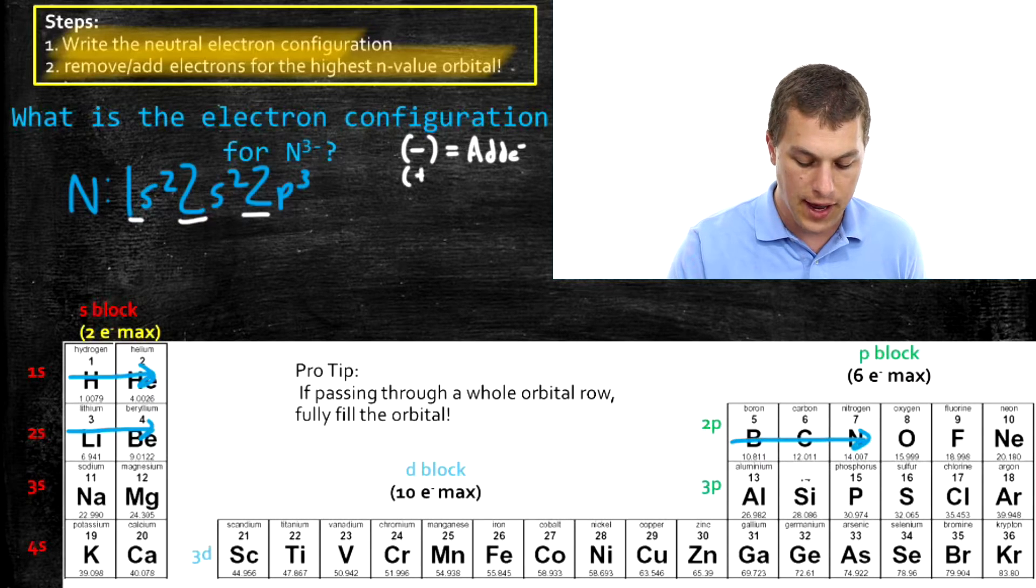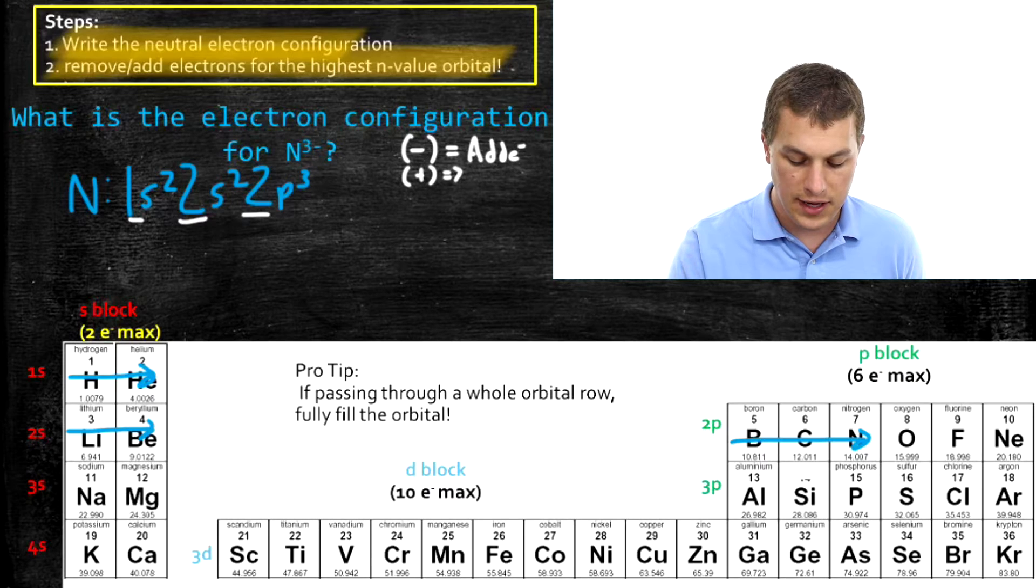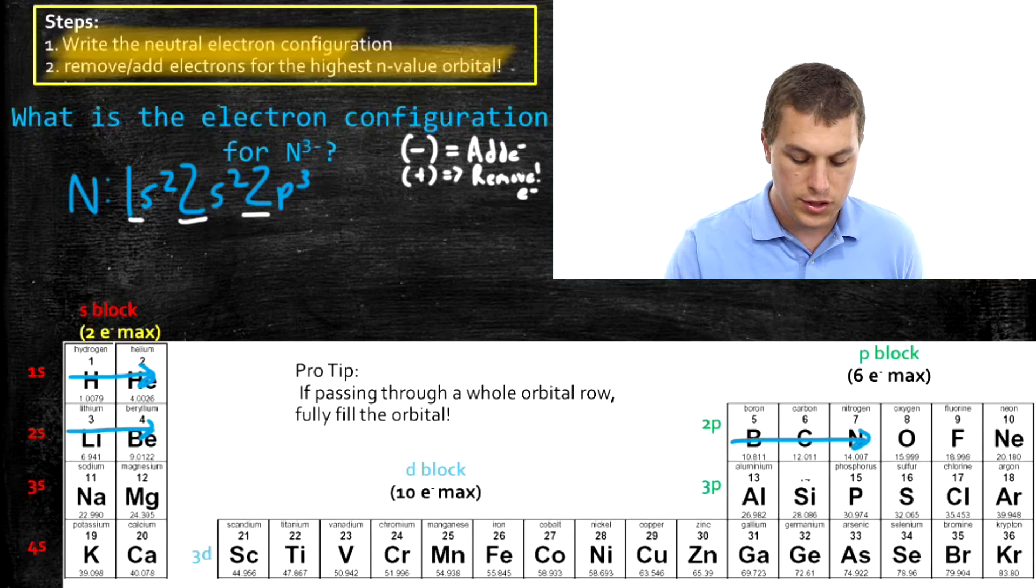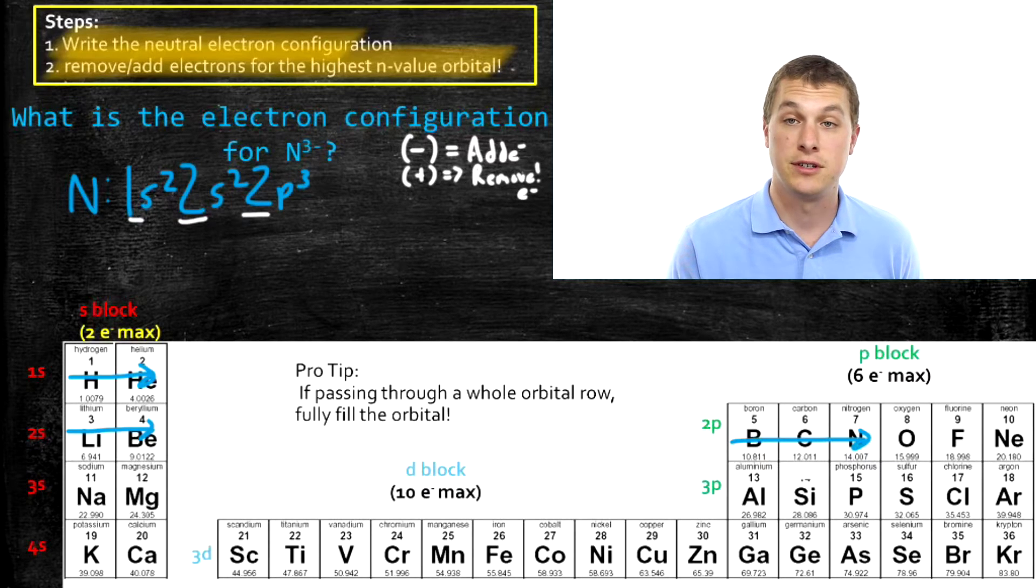And any time I have a positive ion, that means I need to remove electrons. So in this case we have a nitrogen that's negatively three charged. That means it has three extra electrons.